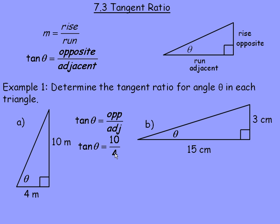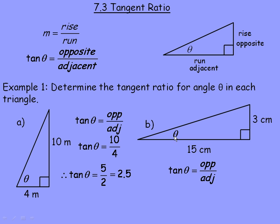So the tan of the angle is 10 divided by 4. Reducing: 10 fourths reduces to 5 halves, or as a decimal, 10 divided by 4 is 2.5. So tan theta equals 5 halves or 2.5. In part B, tan theta is opposite over adjacent. The opposite side is 3 and the adjacent side is 15 — it's right beside angle theta. So tan theta equals 3 over 15, which reduces to 1 fifth or 0.2 as a decimal.